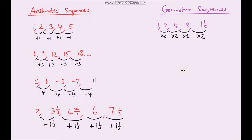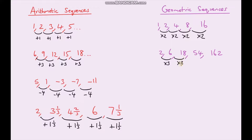Another example: to go from two to six I'm multiplying by three, and to go from six to eighteen I'm multiplying by three. Eighteen times three gives me 54, and 54 times three gives me 162. Both these examples show multiplying by the same amount each time.